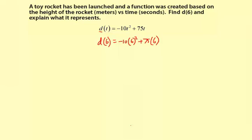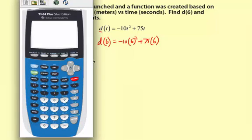I'm just going to use a calculator. Okay, so we're going to have negative 10 times 6 squared plus 75 times 6. Now I can just enter it like this. My calculator knows the order of operations, but you may need to do 6 squared first, then multiply by negative 10, and then 75 times 6, and then add. This guy knows how to do it, though. So here I've got 90.